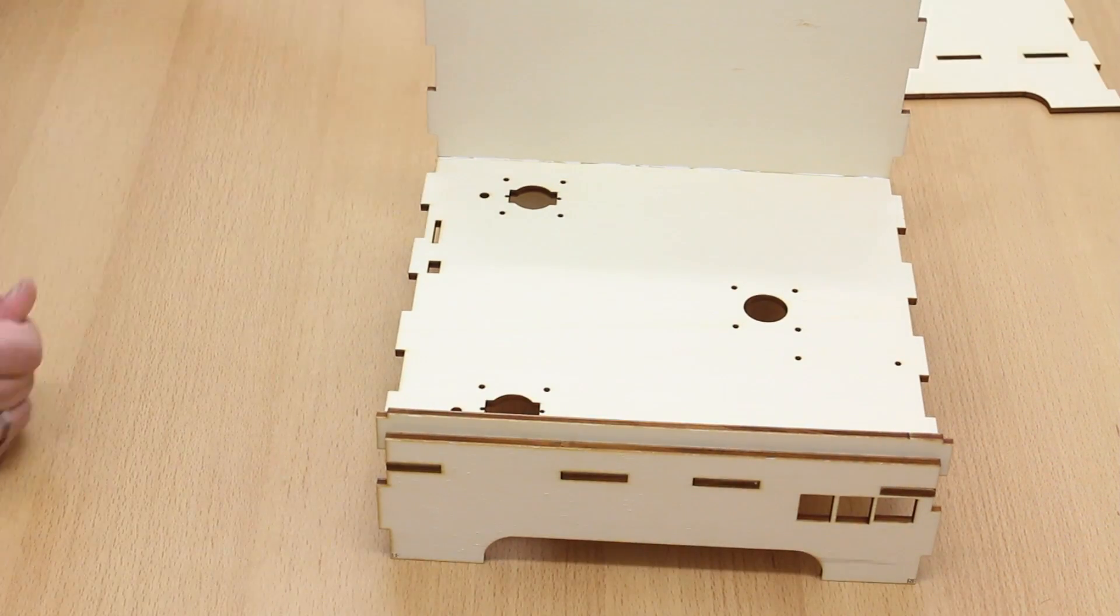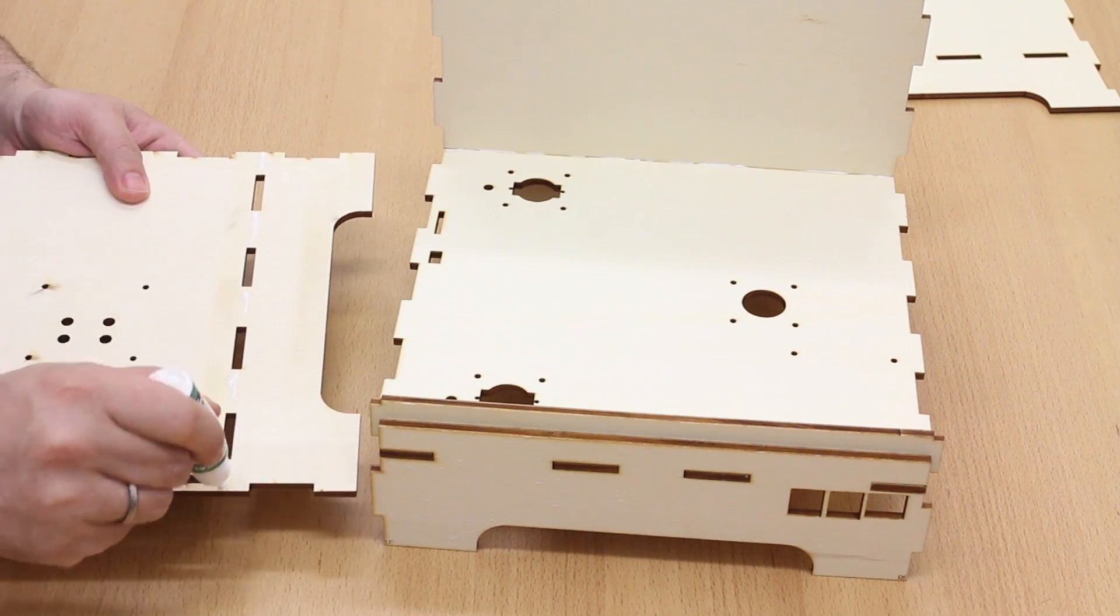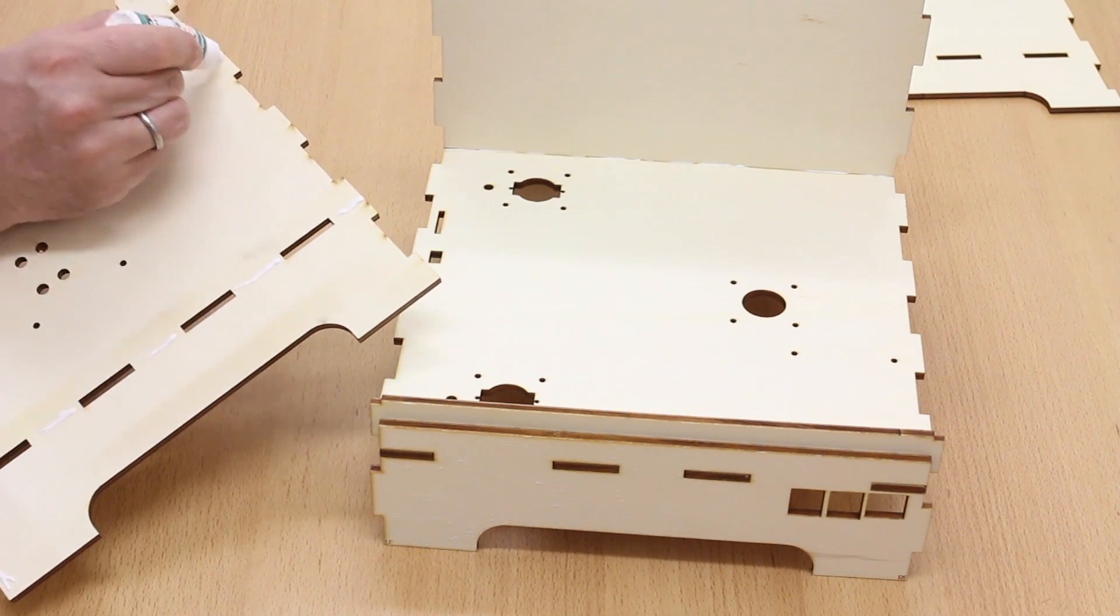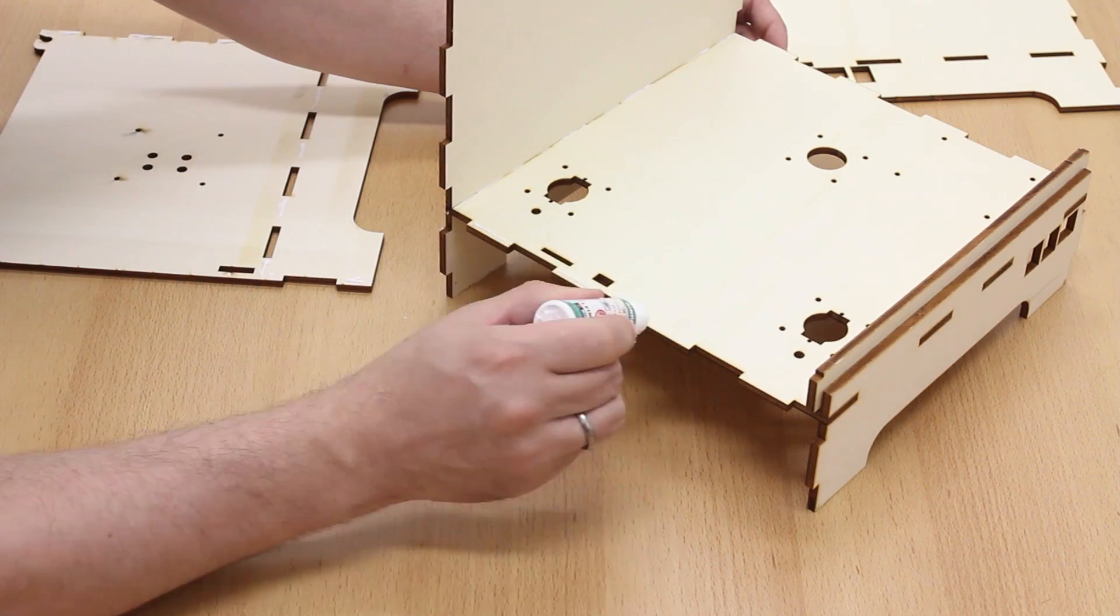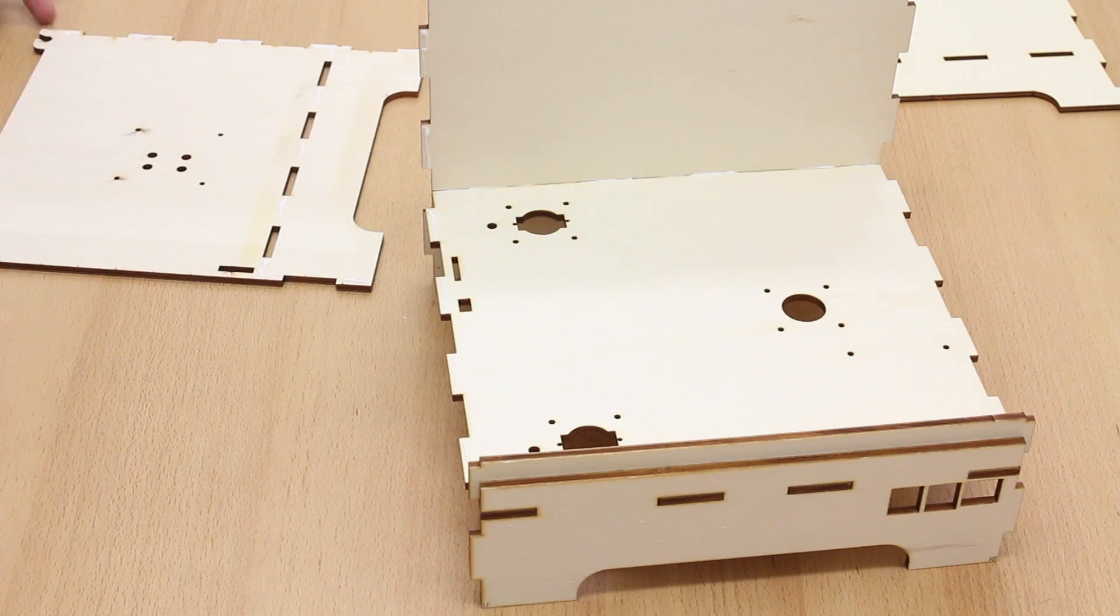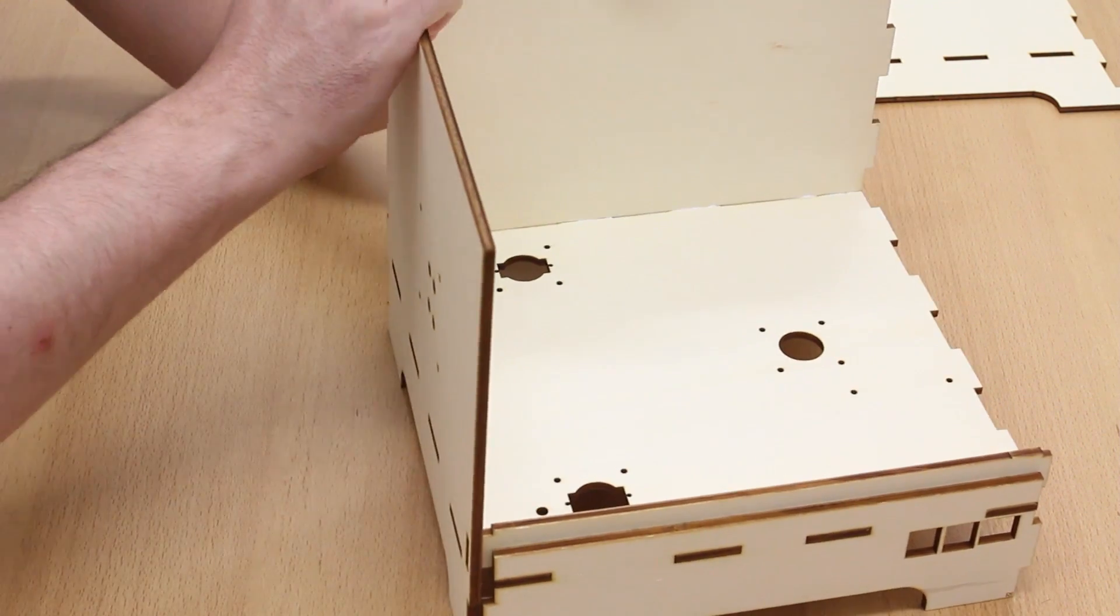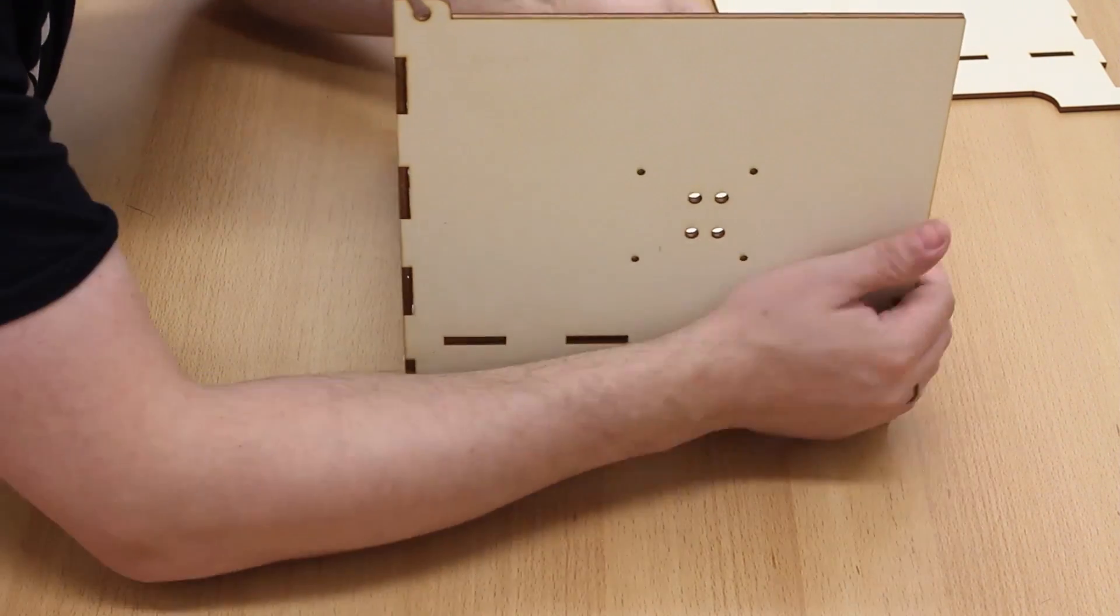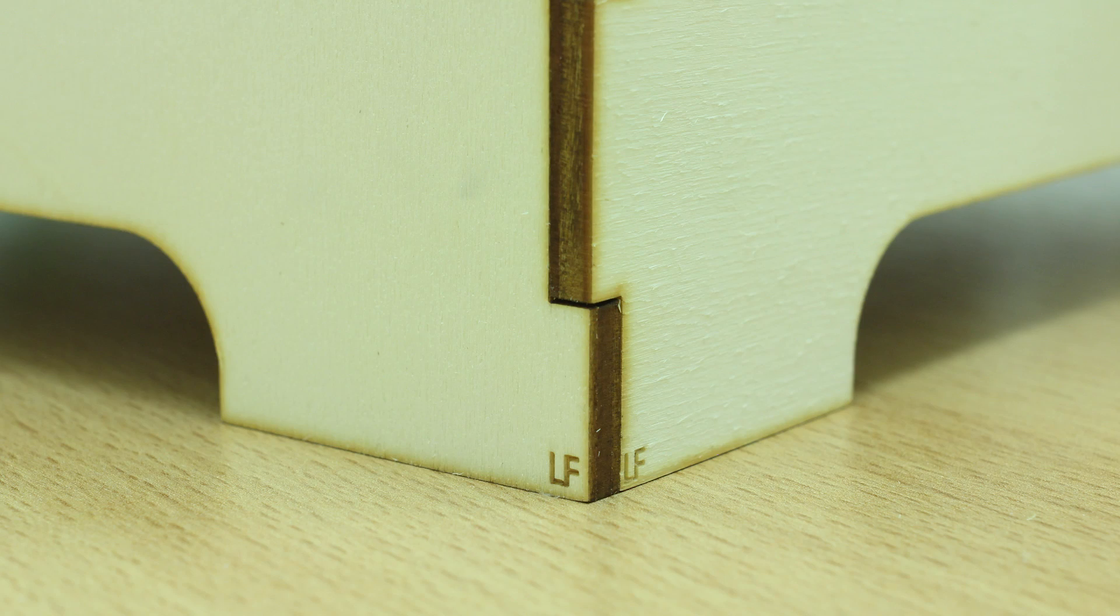This was easy. Now we have to be careful. We are starting with the left piece, the left wall of the housing. Apply glue to it and to the base plate. The left piece, as you can see, has some holes for the camera. So be careful and be sure that it is the right piece. You can see it by the markings LF.